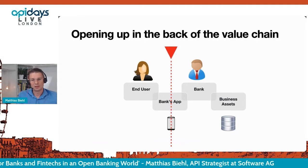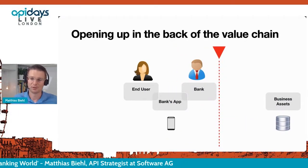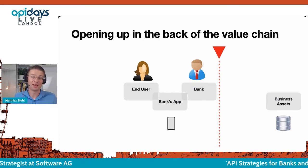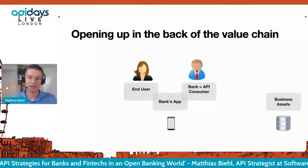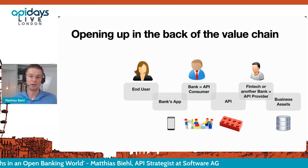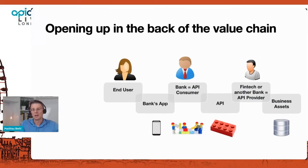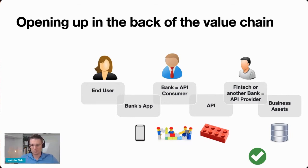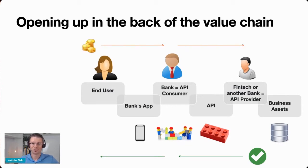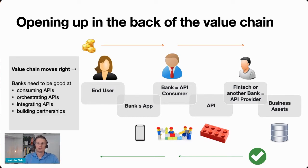The value chain can also be opened up on the other side. That means the bank no longer owns the business assets — they move externally — and the bank becomes not the API provider but the API consumer, using APIs provided by someone else, like a fintech or another bank. Value flows from fintech to bank to end user, with compensation going the other way. This means banks need to be really good at consuming APIs, orchestrating them, integrating them, and building partnerships.